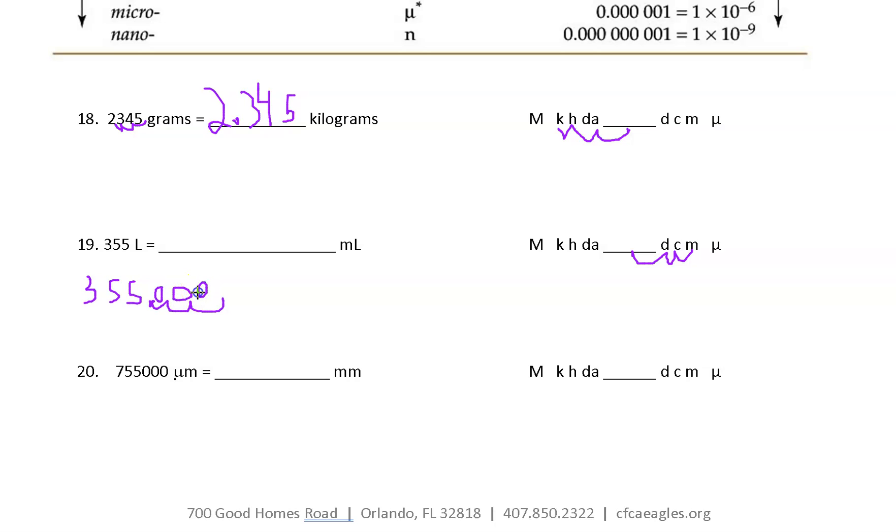And then I put, remember the little phrase eggs in the egg baskets. Sorry, I know this is horrible handwriting, but I'm doing it with a mouse. 355,000. And there's where this won't be. 355,000 is the answer for that milliliters.